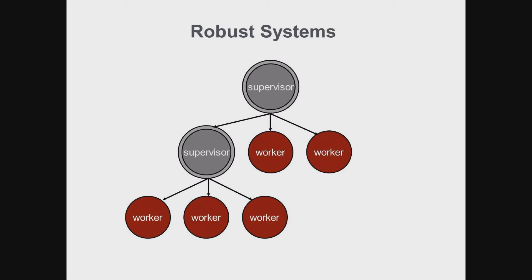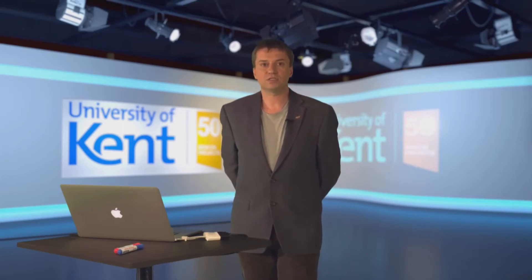Supervisors on a particular level will handle the children in the subtree they're supervising. Children of a supervisor can either be other supervisors or worker processes. Building systems in layers is what makes it robust.